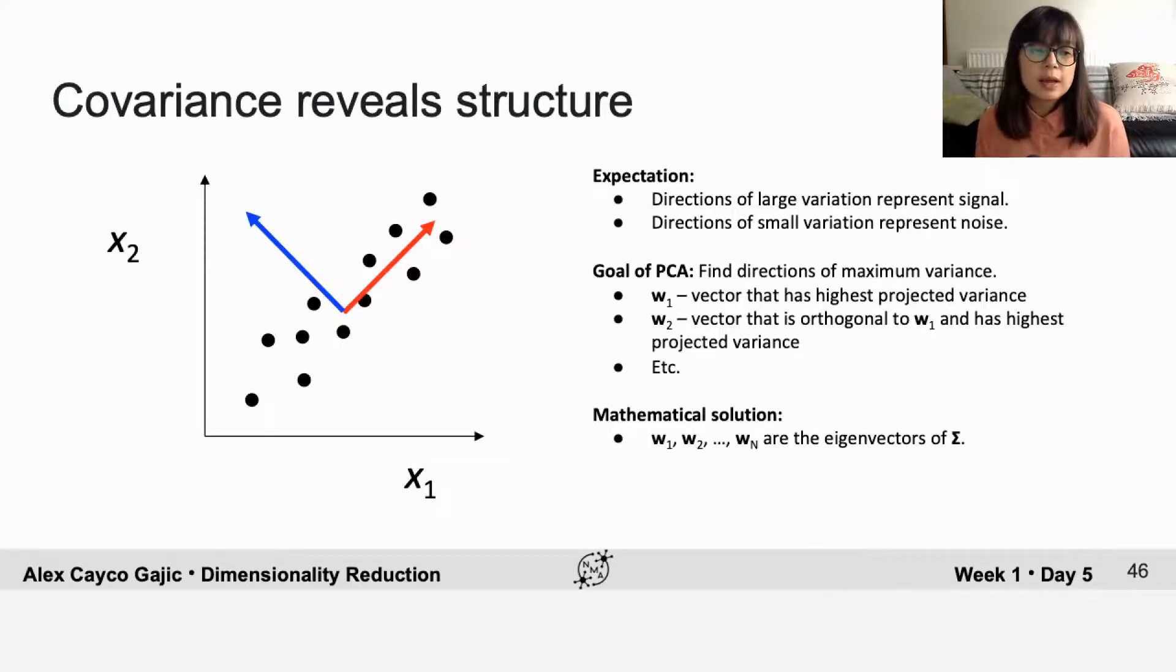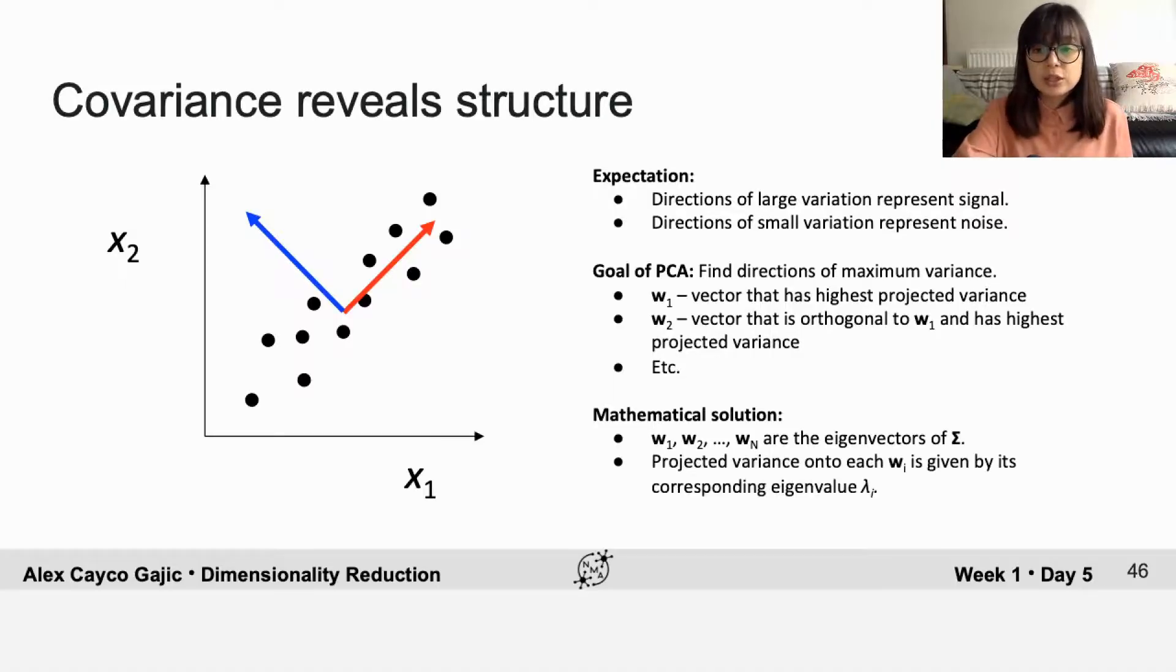If you take the goal of PCA and do the constrained optimization problem on paper, you get out that the solution is the eigenvectors of the covariance matrix. But how do you know which eigenvectors correspond to maximal projected variance? It turns out the projected variance onto each of these vectors is actually just given by the corresponding eigenvalue lambda i. So you don't actually have to calculate the projected variance of the data. This also gives a natural ordering of the eigenvectors of the covariance matrix in order of how much of the variance they're able to explain.